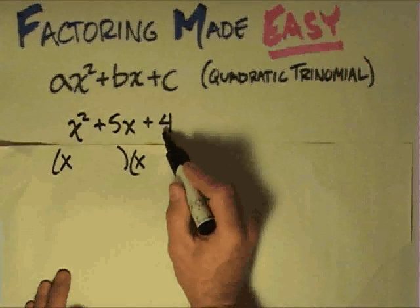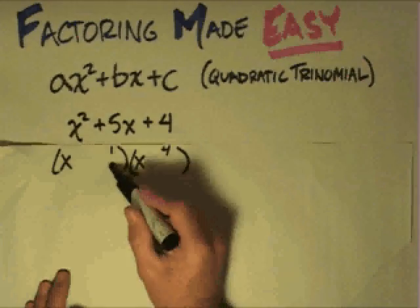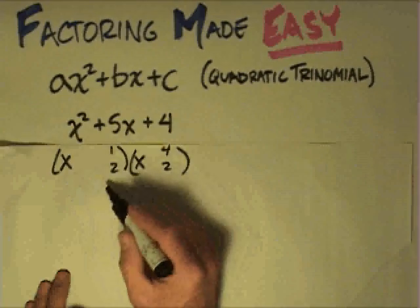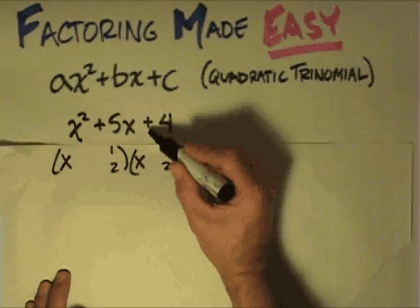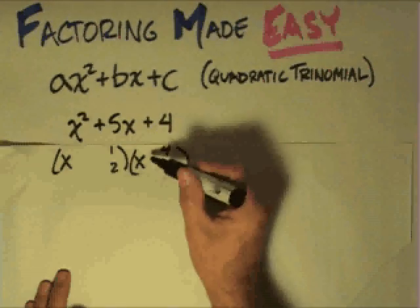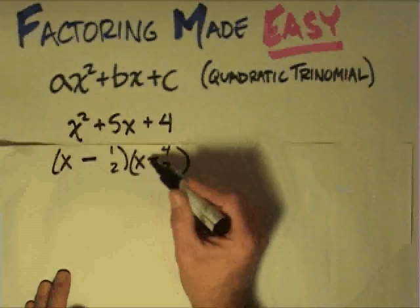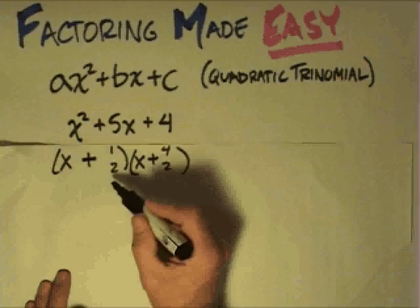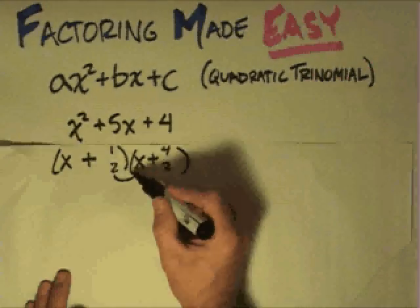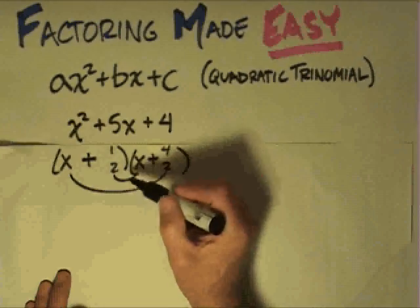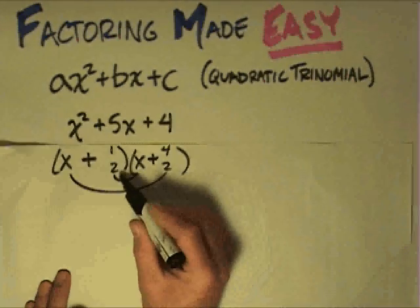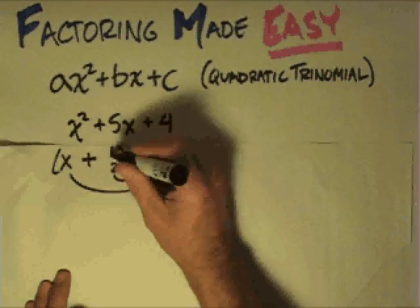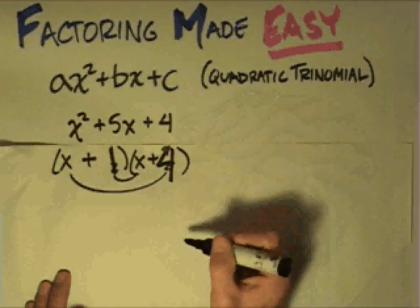The only way to make 4 is with 1 and 4, or 2 and 2. I don't need to reverse it and write 4 and 1 because these are identical. I then look at the plus sign — if it's a plus, then both signs are the same, and in this case both are plus. Then I do the rainbow check: which two numbers multiply to 4 and combine to give me 5? If I use 2 and 2, that gives me 4x — not correct. So it has to be 1 and 4, giving me the factored form with 1 and 4.